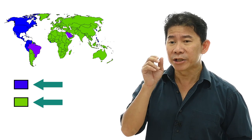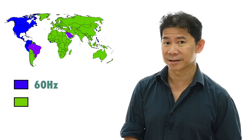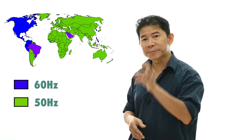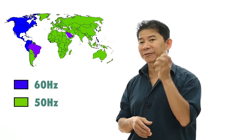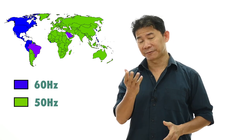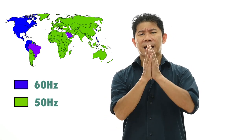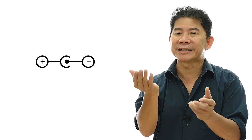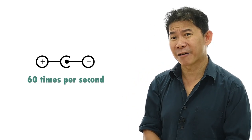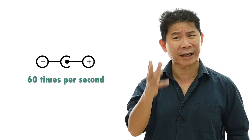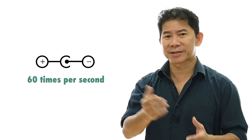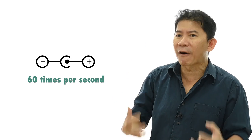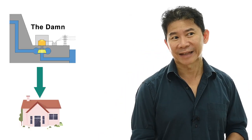Countries that use electricity of alternating current at 60 hertz, and countries that use alternating current at 50 hertz. The polarity of the electricity in 60Hz countries flips 60 times per second, and in 50Hz countries, 50 times. Your battery has fixed polarity — positive and negative. But to go the distance from the power station to your house, the power station needs to use alternating current, flipping the polarity 60 times a second. And that is one of the reasons why electricity can travel so far from the dam to your house.